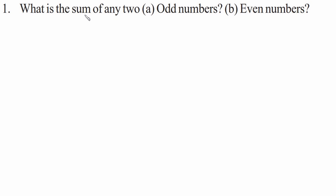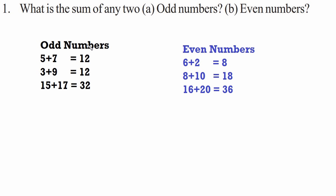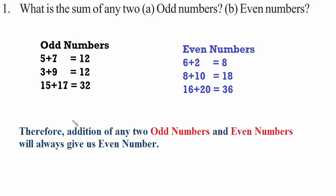Question one: what is the sum of any two odd numbers, and part b, even numbers. We have the combination of odd and even numbers. For odd numbers: 5 plus 7 gives 12, 3 plus 9 gives 12, and 15 plus 17 gives 32, all even. For even numbers: 6 plus 2 is 8, 8 plus 10 is 18, and 16 plus 20 is 36. So addition of any two odd numbers and even numbers will always give an even number.